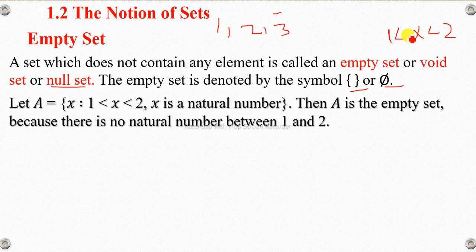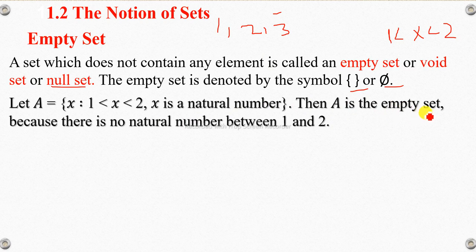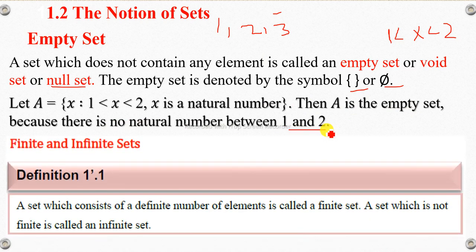There is no natural number between one and two, so A is the empty set.